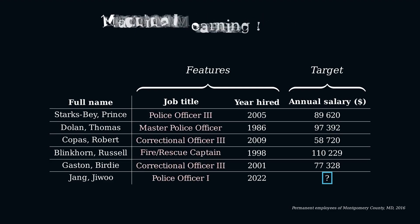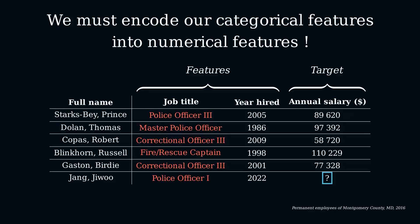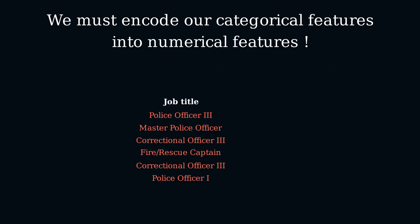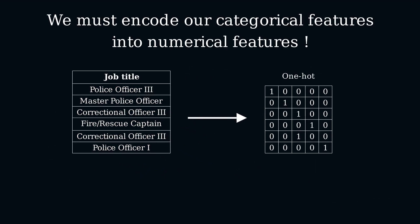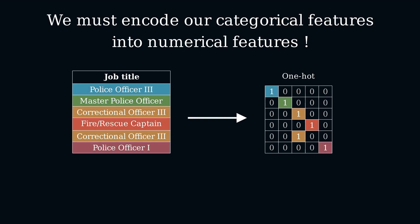We must therefore transform our textual features into numerical features. For categorical variables such as job titles, we could use a one-hot encoding, which transforms each unique value into its own independent component of n-1 zeros and a single one mapping to the category. The keyword here is independent, which means that similarities in the feature — like for example between police officer 3 and police officer 1 — are not accounted for.